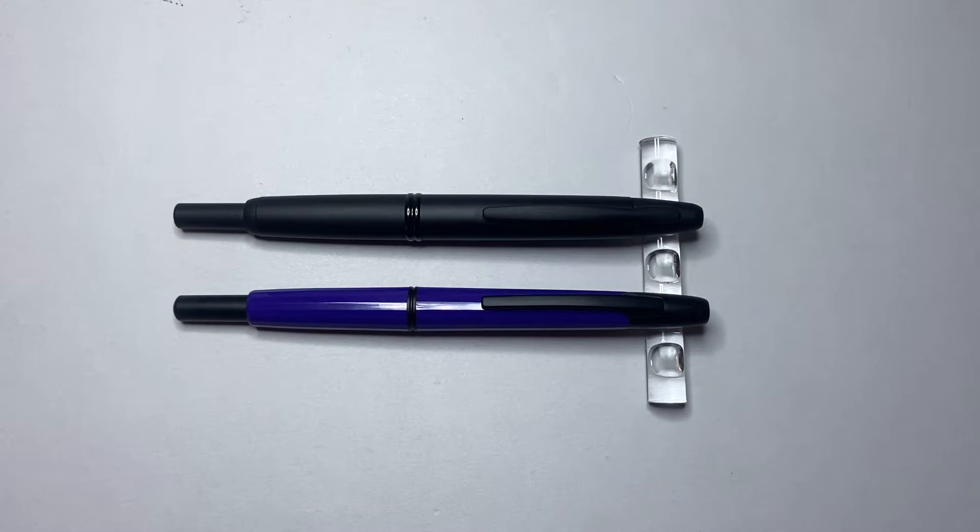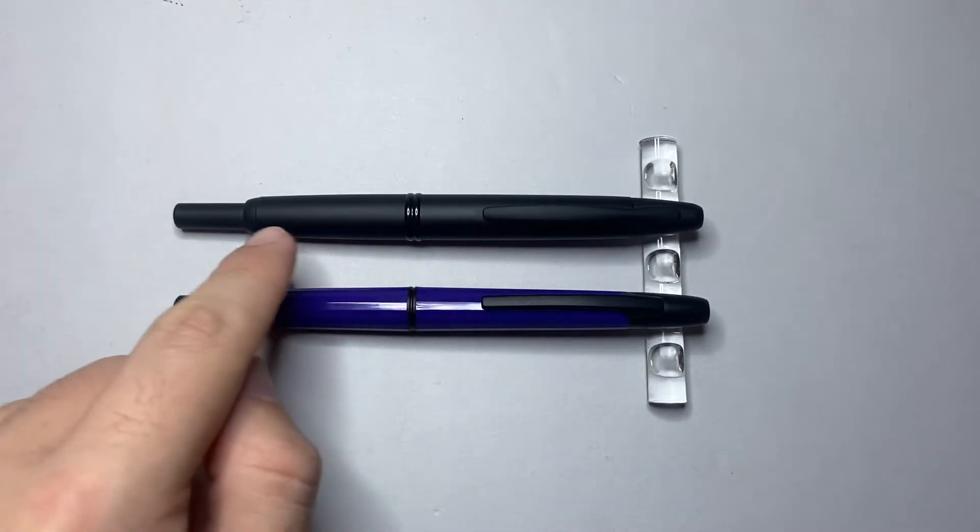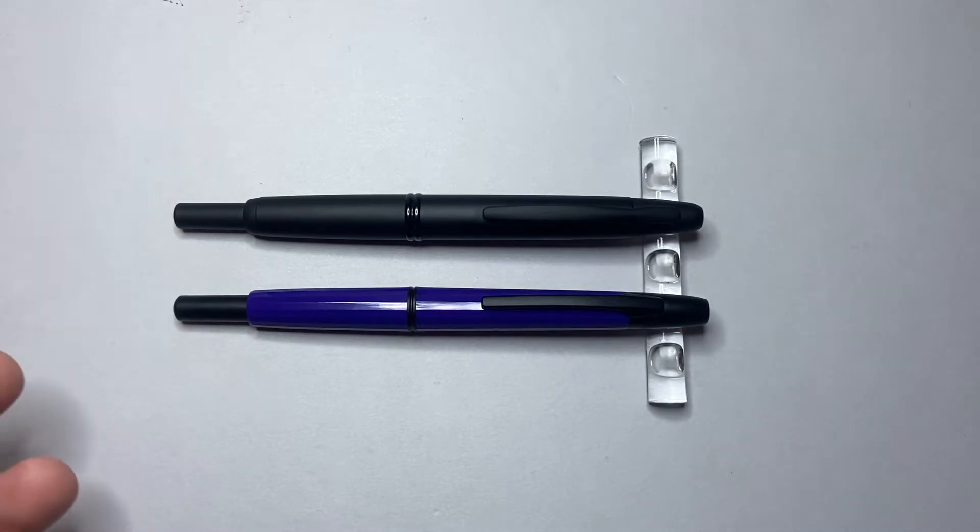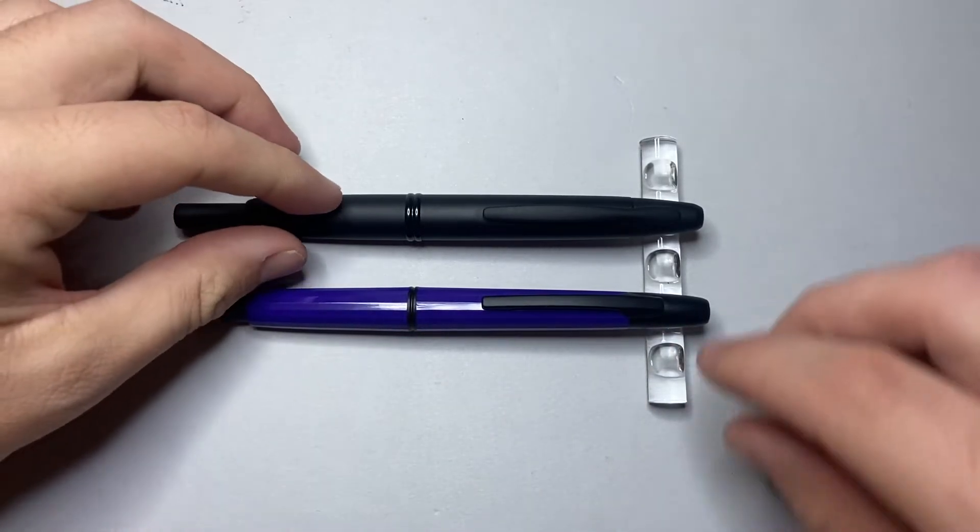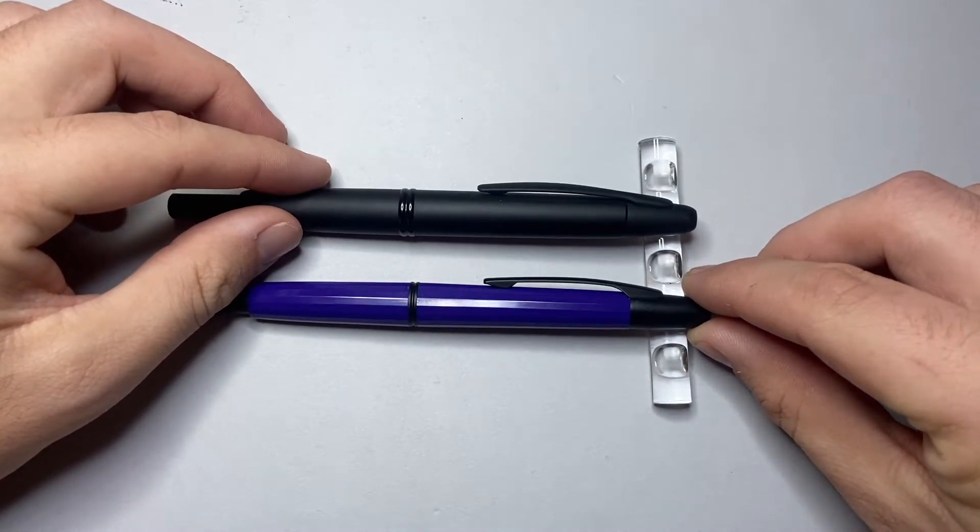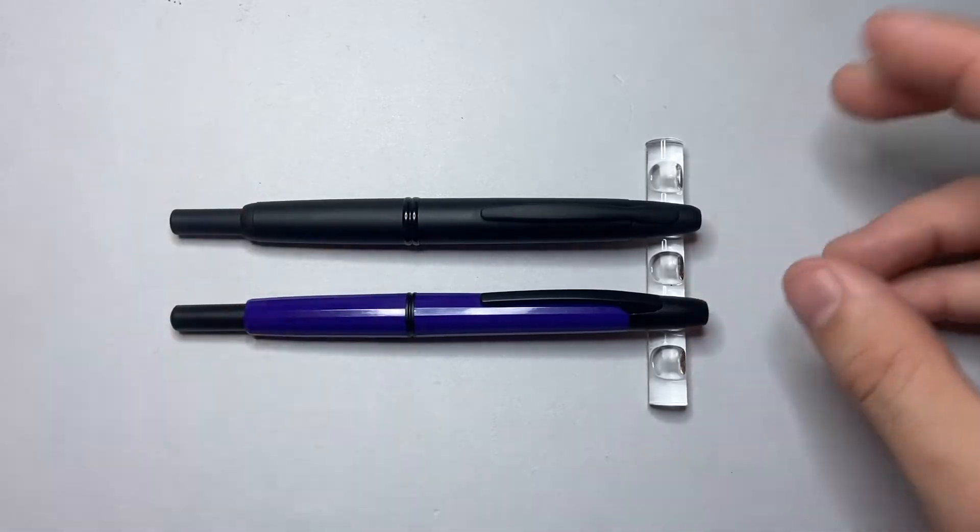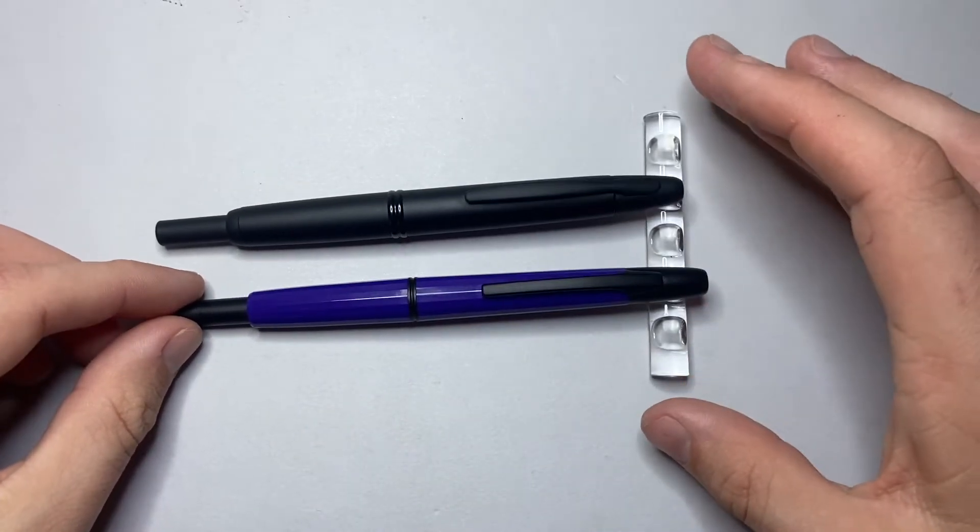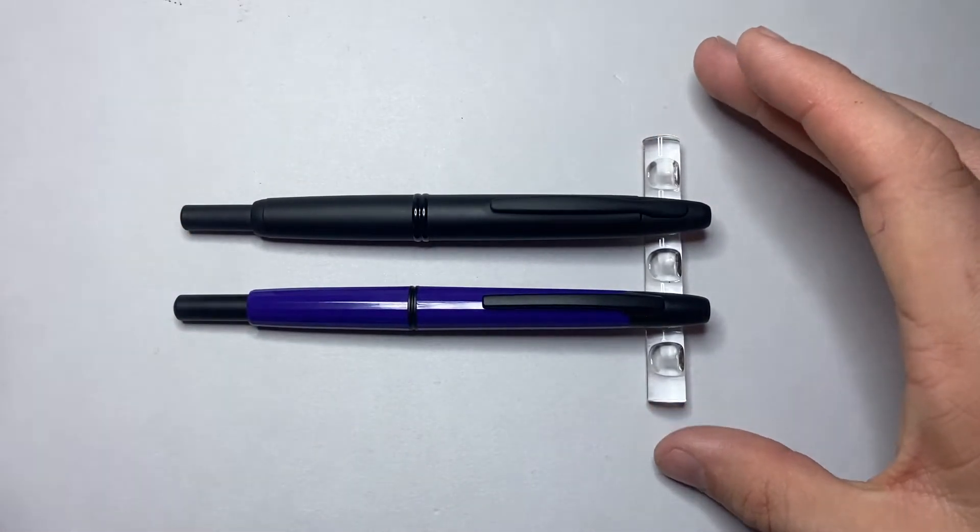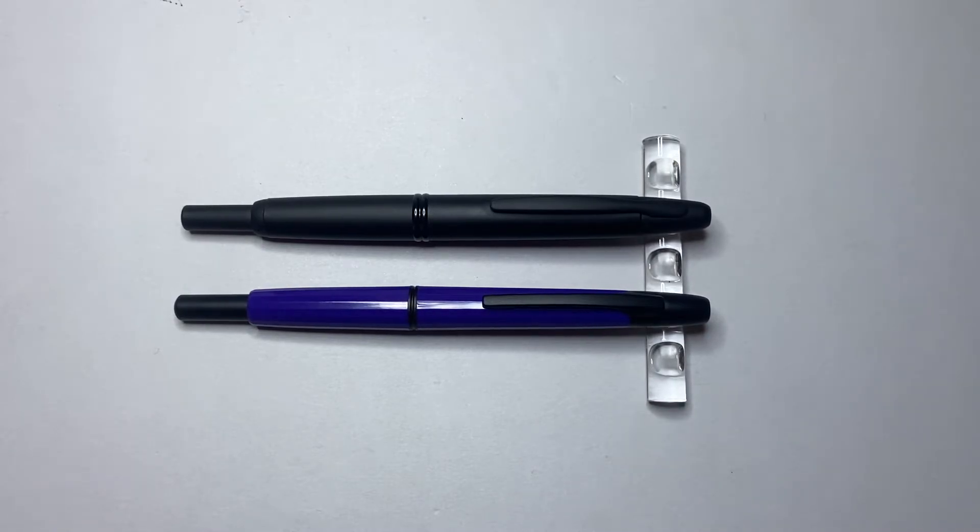So aesthetically there are a couple of differences. You've got a faceted body as opposed to a smooth rounded body. Plastic versus metal. There's slight differences in the clip profile and all those kinds of things. They are slightly different clips. They are slightly different knock and center bands and all those kinds of things. But generally speaking, you can see the Moonman is definitely modelled off the Pilot.